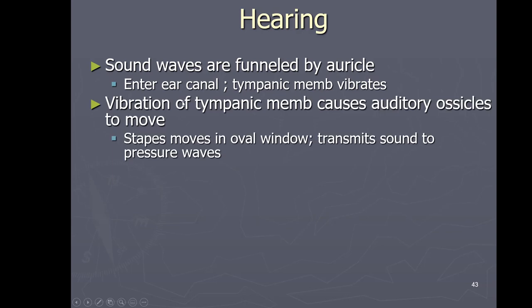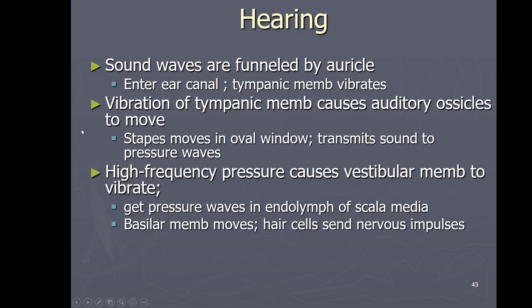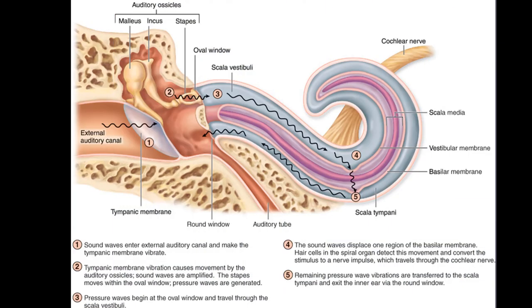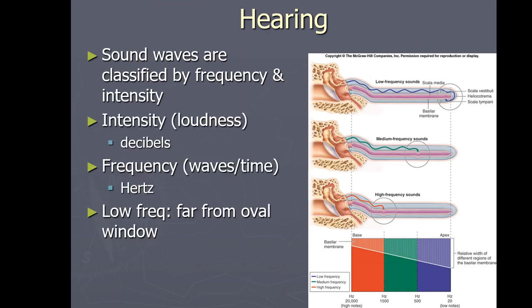To walk through the text: sound waves are funneled by the auricle, enter the ear canal, reach the tympanic membrane, vibration moves the auditory ossicles, the stapes moves in the oval window, pressure waves cause the vestibular membrane to vibrate producing pressure waves in the endolymph of the scala media, the basilar membrane and organ of Corti move, hair cells generate nervous impulses, remaining pressure waves go into the perilymph of the scala tympani and exit at the round window.